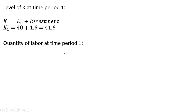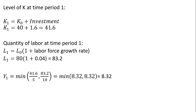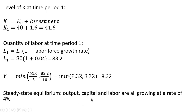The quantity of labor at time period one — L subscript one — is just the quantity of labor last period times one plus the labor force growth rate, which is 4 percent. So 80 times 1.04 is 83.2. Plugging our level of capital and labor in period one into our production function, output will be 8.32 units in period one. So we are at a steady state equilibrium: output, capital, and labor are all growing at a rate of 4 percent. Output went from 8 to 8.32, capital went from 40 to 41.6, and labor went from 80 to 83.2 — all 4 percent increases.